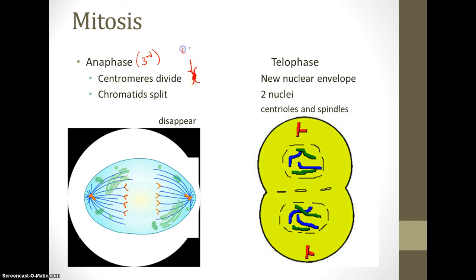The centromeres separate, so this is split into two parts. That is what occurs in anaphase. The centromeres split up and go to opposite poles, so half of the chromosome goes to one side and the other to the other. Sister chromatids split into two parts. It's kind of like we have a break in the cell.